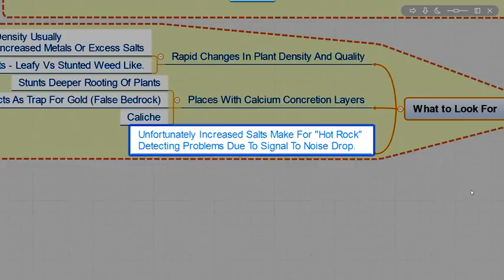A good discriminating detector will be able to tell that apart. The problem is a good discriminating detector is a little more expensive. We'll get into that later when we talk about detectors. But that's kind of the thing you're looking for in the desert. Those salts are just part and parcel of what a desert is.